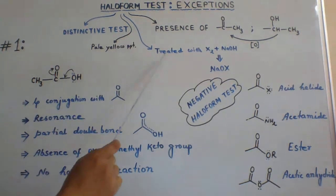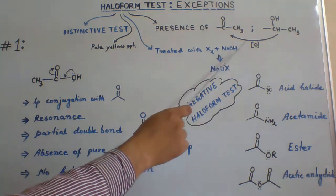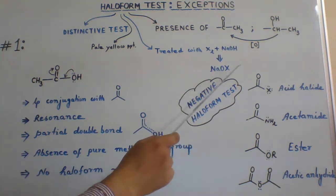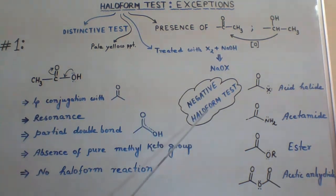Haloform reaction is generally carried out with a mixture of halogen and sodium hydroxide which will produce sodium hypohalite. This is one of the reagents used in haloform reaction.